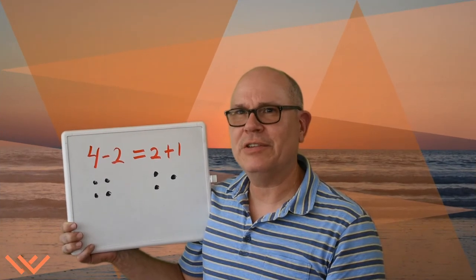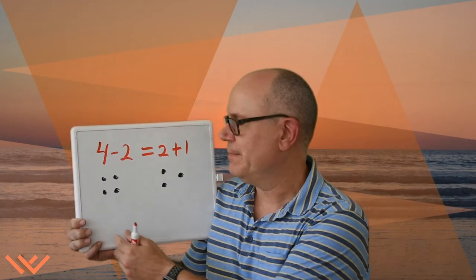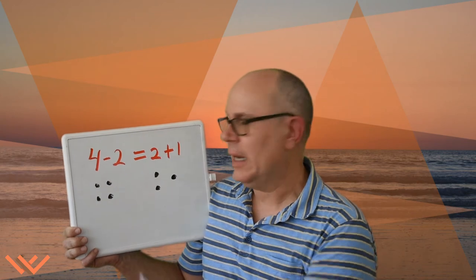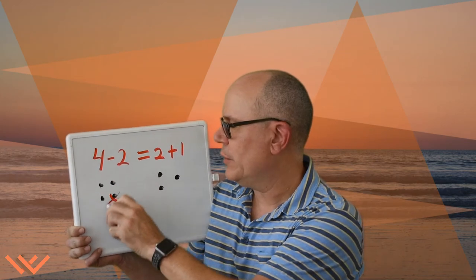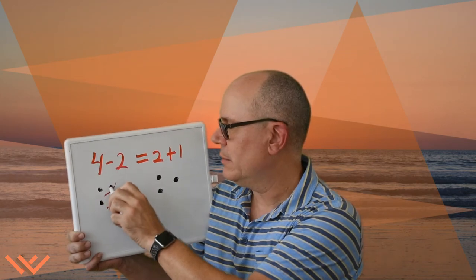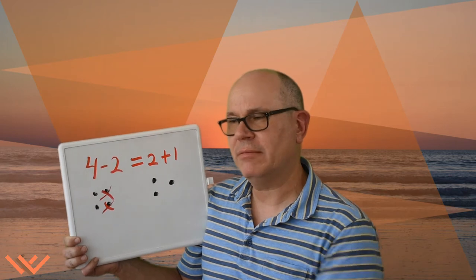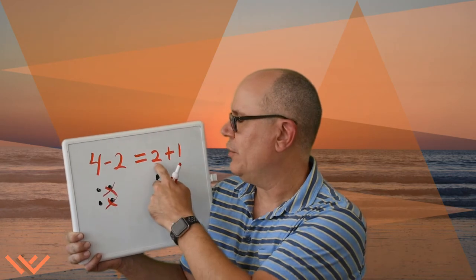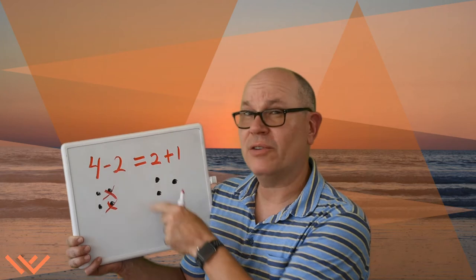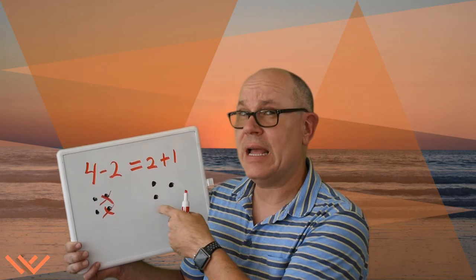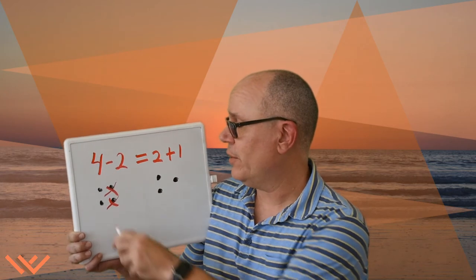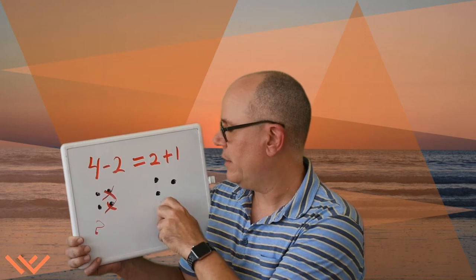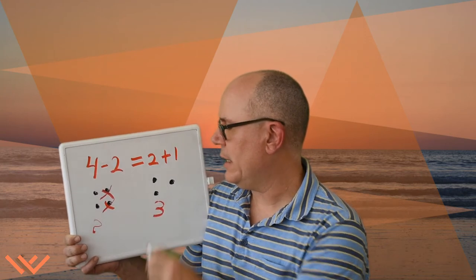Okay mathematicians, I drew a picture. I have 4 and then I take away 2. How many do I have? I have 2. And over here I have 2 plus 1 — I don't take any away — so I have 3. So there's 2 and 3.